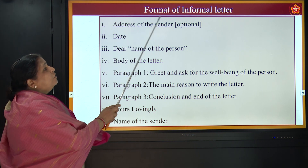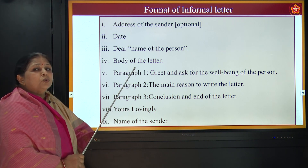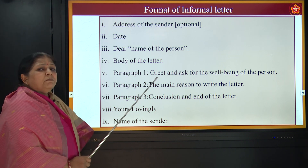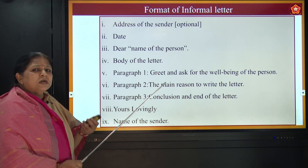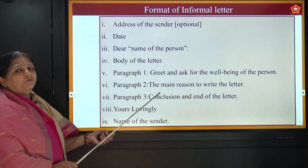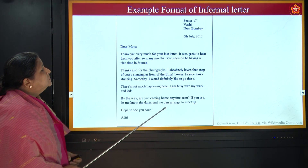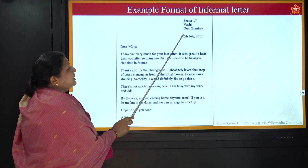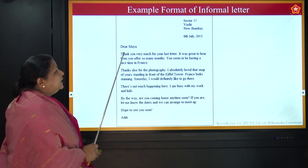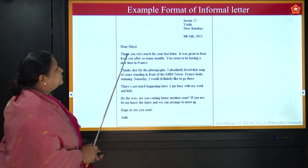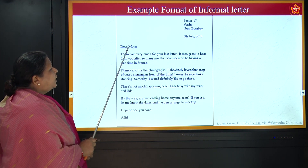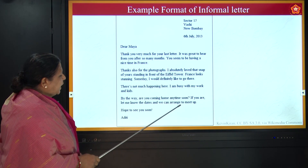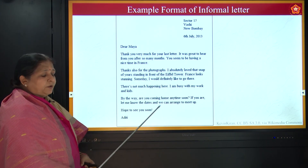This format of informal letter is very important. Go through it again and again, keep the format properly — make 10 or 20 letters, keep writing in your notebooks, then only you will be perfected with it. This is a simple format: the name is there, address is there, then the date, here the name of your friend, then you are writing 'thank you very much for your last letter', and then 'hope to see you soon' and your name.